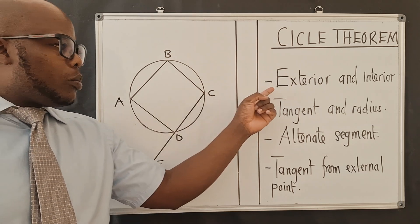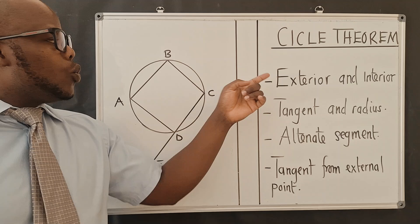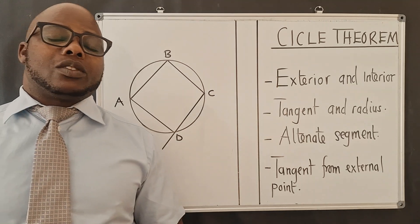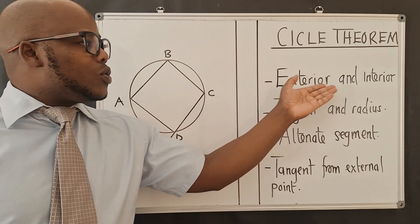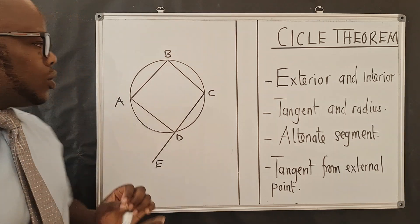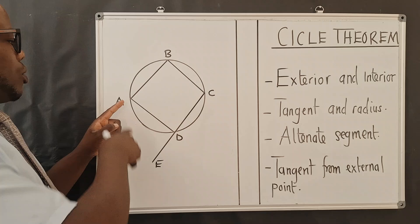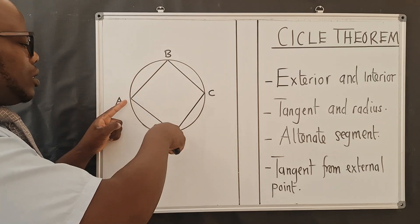So the first property here now, or in this video, we shall call it property number six, which is this one. So property number six talks about the exterior and interior angle of the cyclic quadrilateral. So can you see, this is a cyclic quadrilateral here. We've got point A, B, C, D, and E.